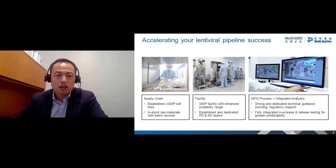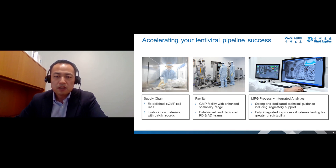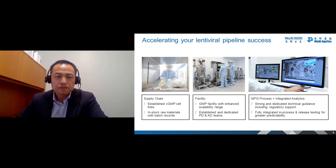The Xlenti system covers all procedures for CGMP lentiviral vector production, including supply chain, facility, manufacturing process, and fully integrated testing. For supply chain, we have a CGMP suspension cell line, in-stock raw materials, and well-prepared batch records ready for client projects. For facility, we have GMP facilities with large-scale production capacity, and support from PD, AD, and other teams. For process and analytics, we have well-trained staff, scientists, and fully integrated in-process and release testing. The Xlenti system will ensure production success and accelerate client lentiviral pipeline success. Xlenti AppTec also has a CAR-T platform, which allows us to provide a strong solution from lentiviral vector production through CAR-T services.